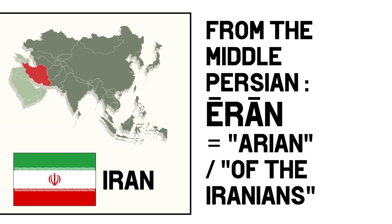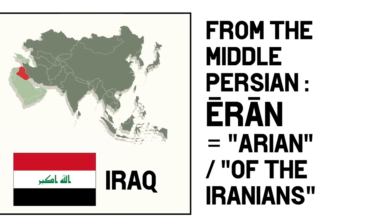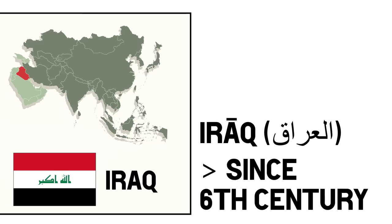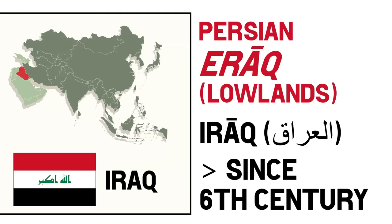And with a very similar name but a different origin, Iraq. Iraq probably has one of the oldest continuous names — the Arabic version has been in use since at least the 6th century. There are several suggested origins: one dates to the ancient Sumerian city of Uruk, another is from the Middle Persian word Iraq meaning lowlands, and the traditional meaning associated with it means well-watered and fertile.